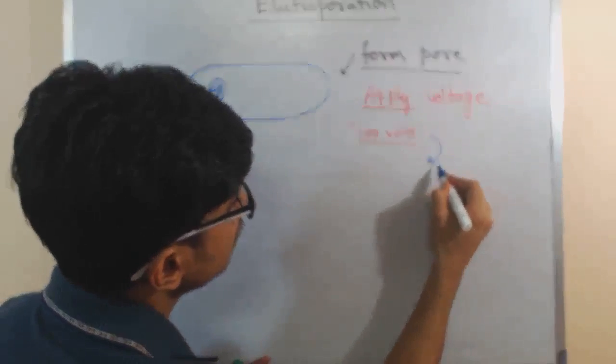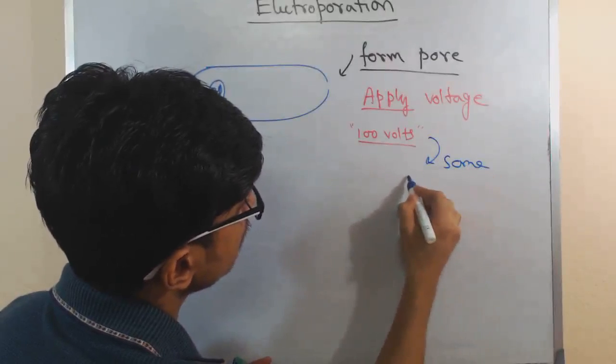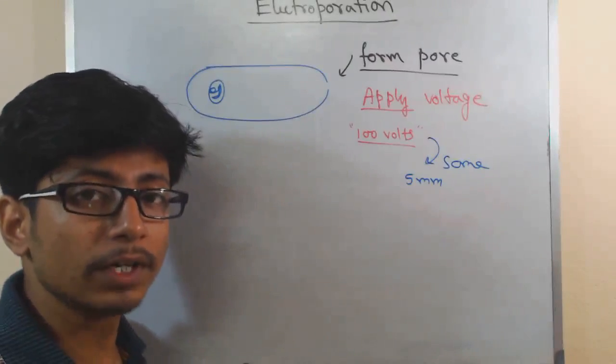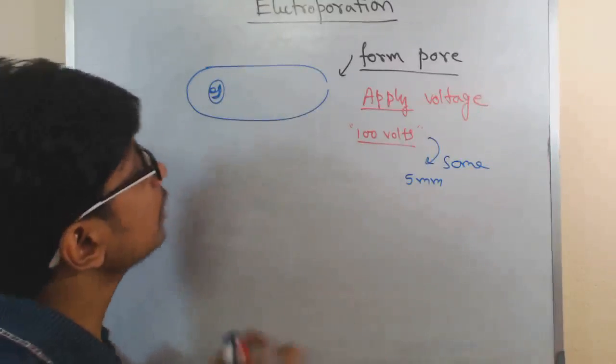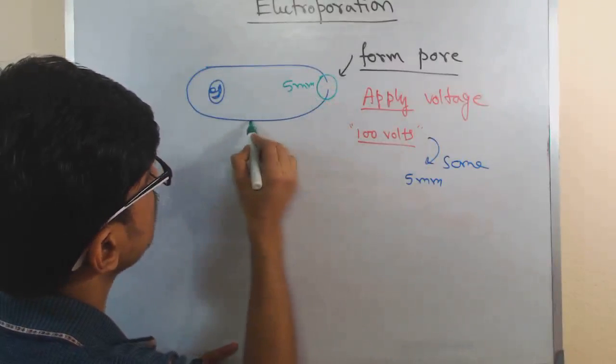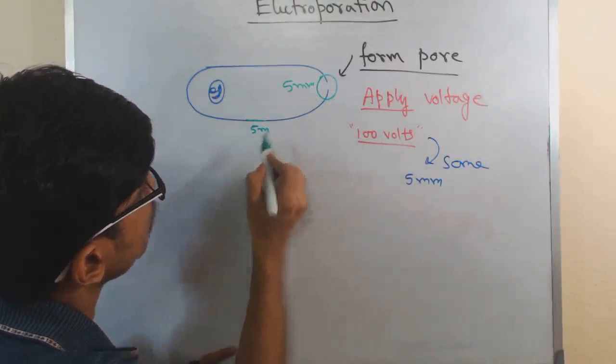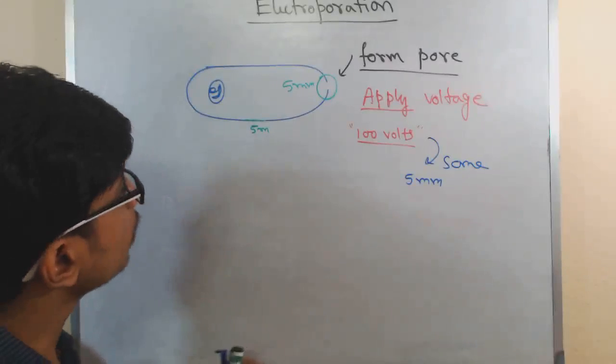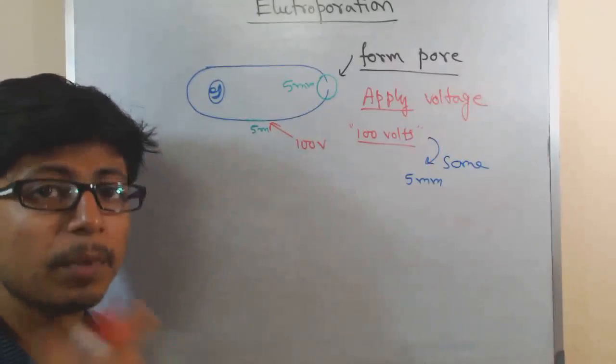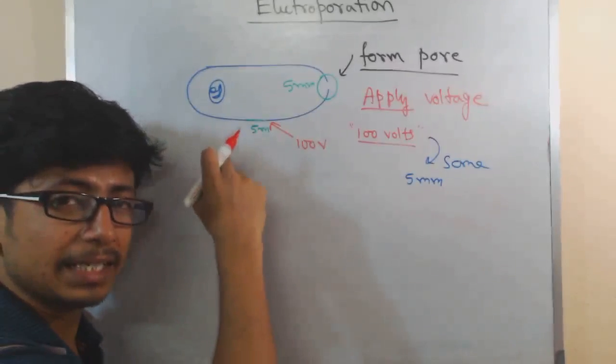So we apply that amount of voltage generally in some, let's say, 5 millimeter distance of a region. Let's say this is the section which is only 5 millimeters long, and we apply this voltage, this mild voltage of 100 volts here, with the help of electrodes placing inside the cell membrane.